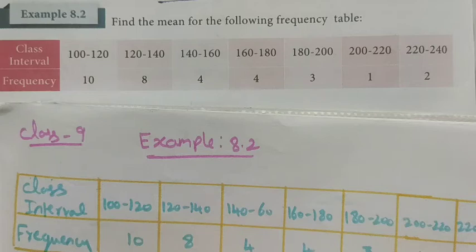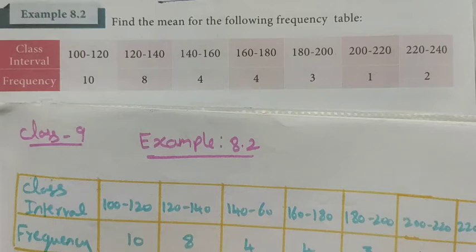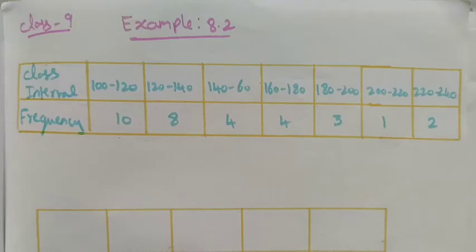Hi students, Class 9 Examples of 8.2 - find the mean for the following frequency table. The class intervals are given as 100-120, 120-140, and so on up to 220-240, and the frequencies are given as 10, 8, 4, 4, 3, 1, 2.